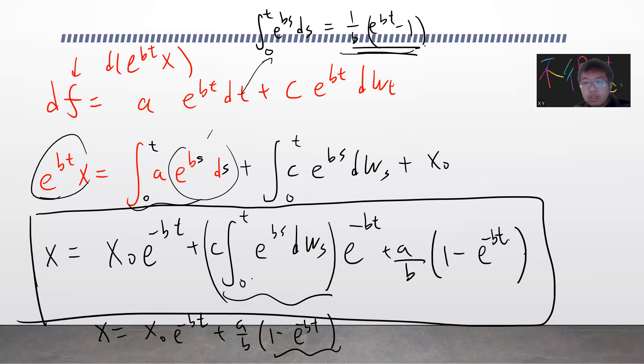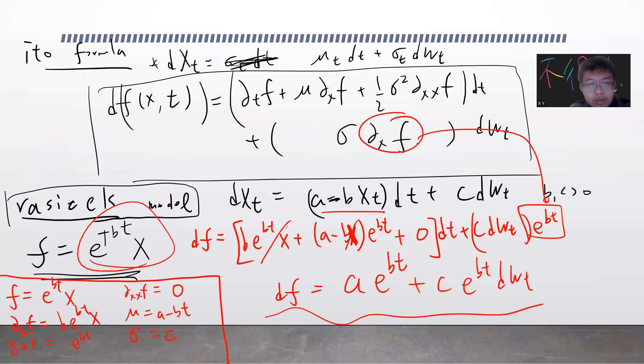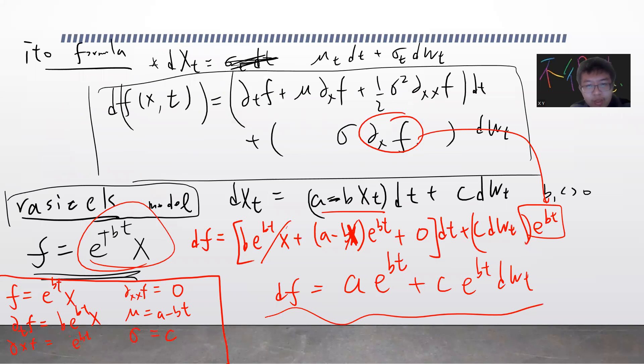So this second example is about this model using Itô's formula. This is the whole calculation. Next time we'll do the third model, and hopefully through these three models you'll know how to use Itô's formula.